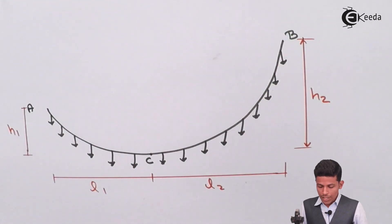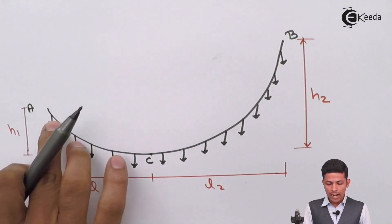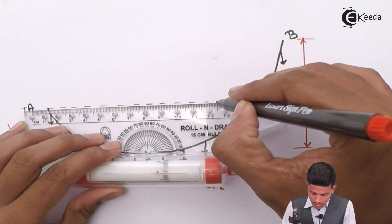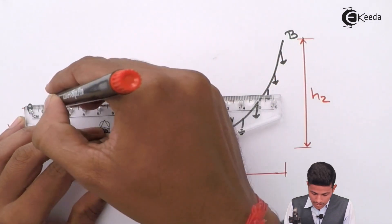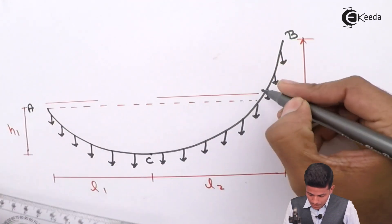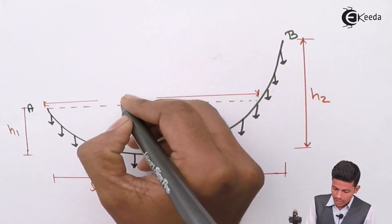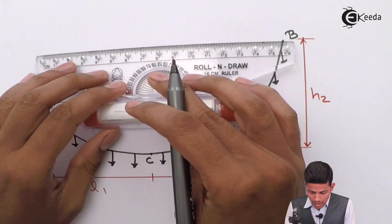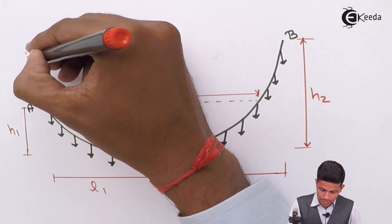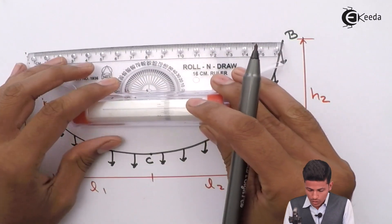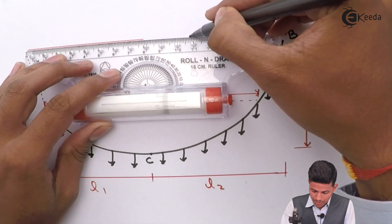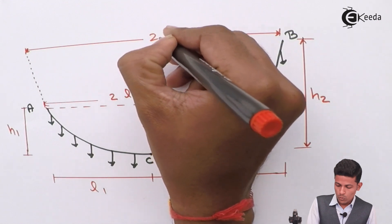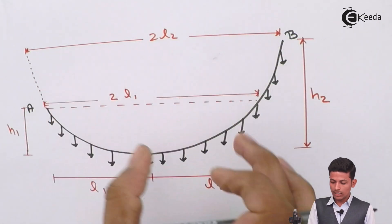Now, if we take something in this part, this distance is 2 into L1. If you extend this cable, it will come over here, and this distance is 2L2. So this is L2 and this is your 2L1.